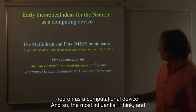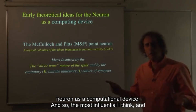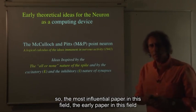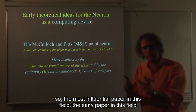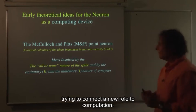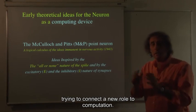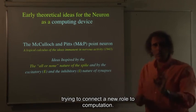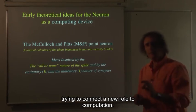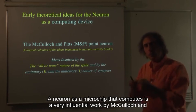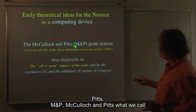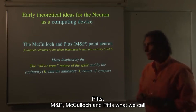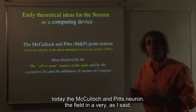And so the most influential paper in this field, the early paper in this field trying to connect a neuron to computation, a neuron as a microchip that computes, is a very influential work by McCulloch and Pitts, M&P, what we call today the McCulloch and Pitts neuron.